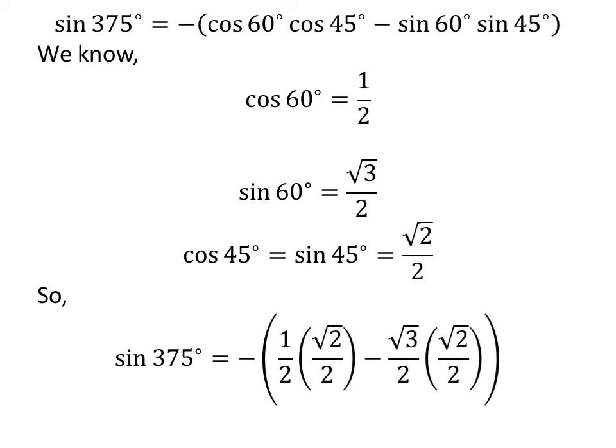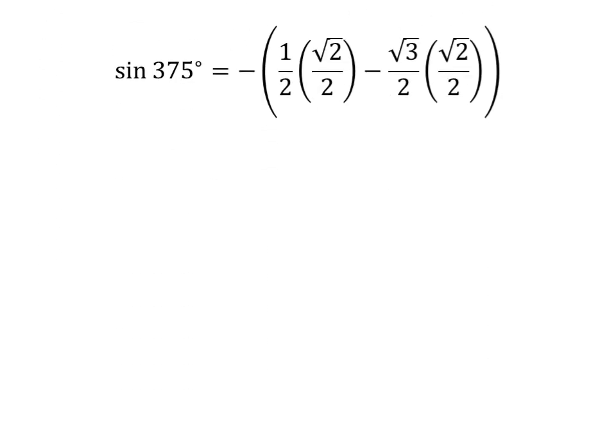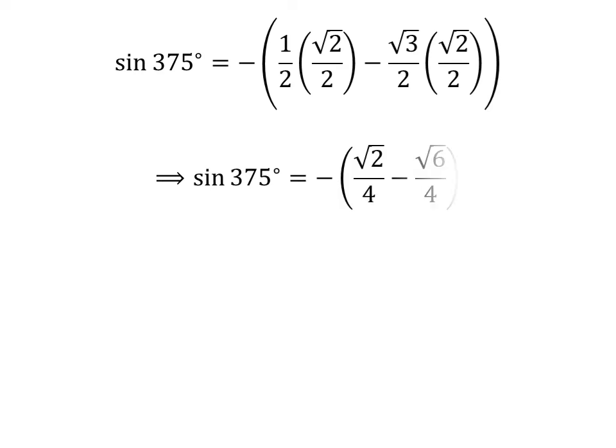We get sine of 375 degrees is equal to minus one half times square root of 2 over 2, minus square root of 3 over 2 times square root of 2 over 2. Straight multiplication gives us sine of 375 degrees is equal to minus square root of 2 over 4, minus square root of 6 over 4.